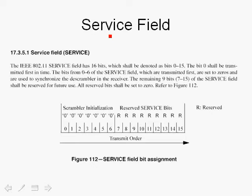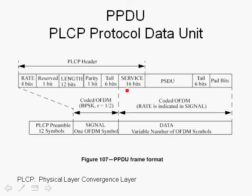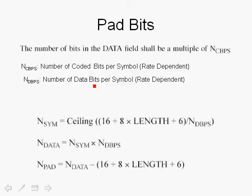The service field immediately follows the signal field and is part of the OFDM symbols that carry the data. The service field and the data are incorporated into the modulated OFDM symbols that follow the signal field OFDM symbol. The service field has seven bits used to initialize the scrambler, plus a number of reserved bits. The pad bits are added such that the total number of bits to be transmitted, including the tail bits and service bits, forms a multiple of the number of coded bits per symbol.